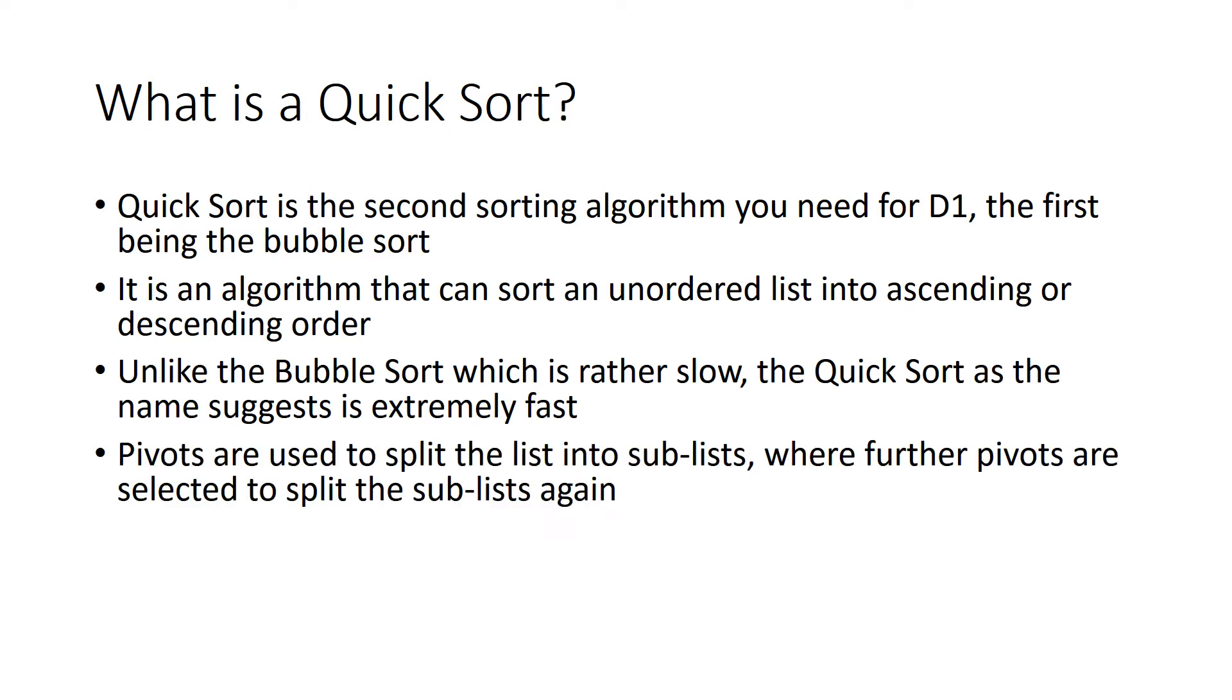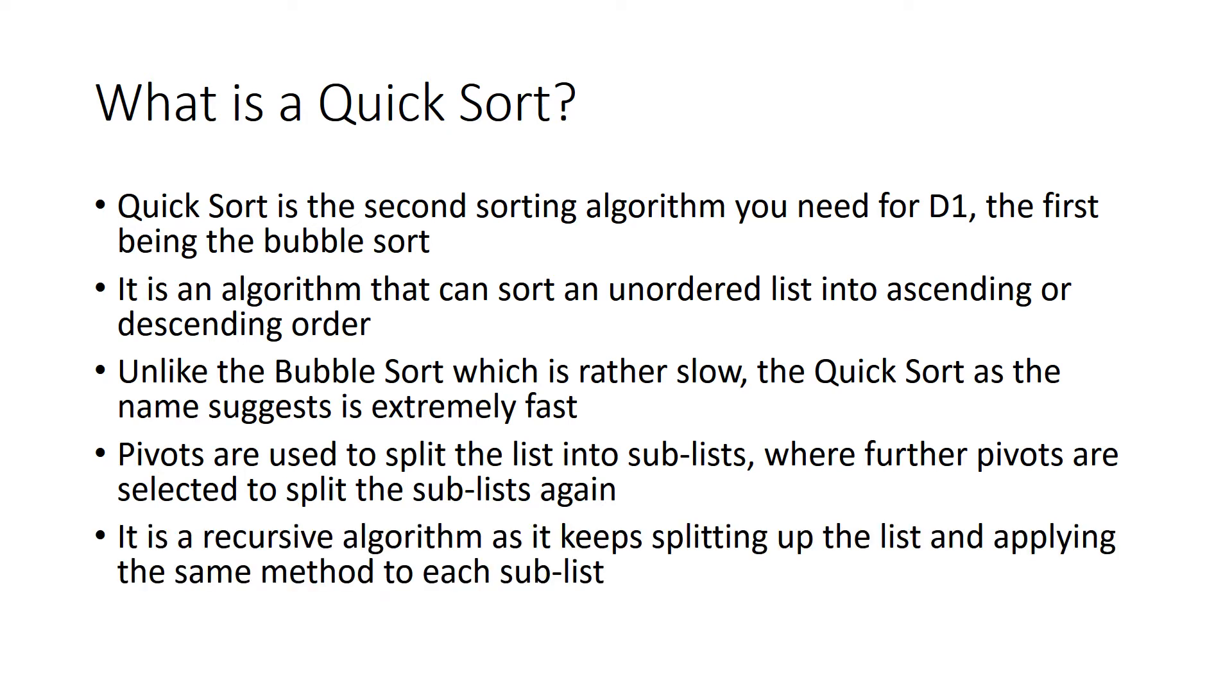Pivots are used to split the list into sublists, so essentially we take a location of a list which we call our pivot and we sort it around that. Then when we sort that into sublists we take further pivots and sort the sublists again. This is why it's known as a recursive algorithm as it keeps splitting up the list and applying the same method to each sublist.